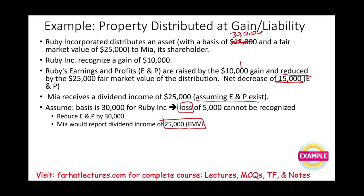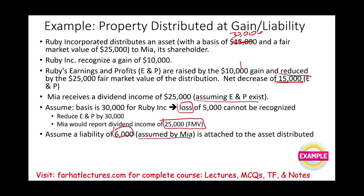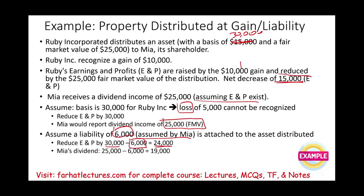Let's change the scenario again: assume a liability of $6,000 is assumed by Mia, and the basis is still $30,000. Ruby reduces E&P by $30,000 minus $6,000, equaling a $24,000 reduction. Mia's dividend is $25,000 minus $6,000, which equals $19,000. However, Mia's basis in the property is still the full fair market value of $25,000 — the basis is not reduced by the liability, only the dividend amount is.